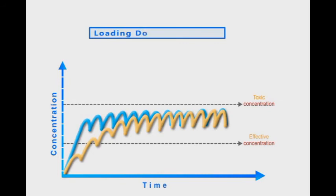Mathematically, the dosing rate is equal to the volume of distribution multiplied by the steady state concentration.